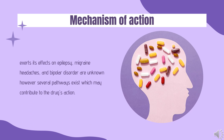The exact mechanisms by which valproate exerts its effects on epilepsy, migraine headaches, and bipolar disorder are unknown. However, several pathways may contribute to the drug's action. Valproate is known to inhibit succinic semialdehyde dehydrogenase, resulting in an increase in succinic semialdehyde, which acts as an inhibitor of GABA transaminase — ultimately reducing GABA metabolism and increasing GABAergic neurotransmission. As GABA is an inhibitory neurotransmitter, this increase results in increased inhibitory activity. A possible secondary contributor is direct suppression of voltage-gated sodium channel activity and indirect suppression through effects on GABA.